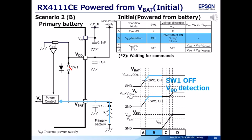Scenario 2, Case B: When VBAT rises further, switch 1 turns off. VDET that monitors VDD starts operating.